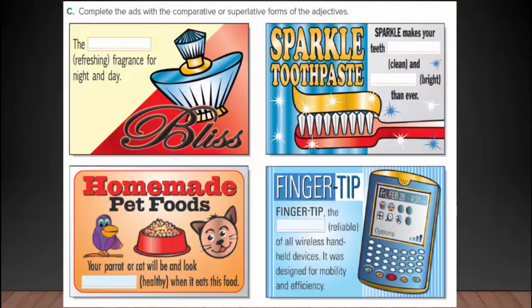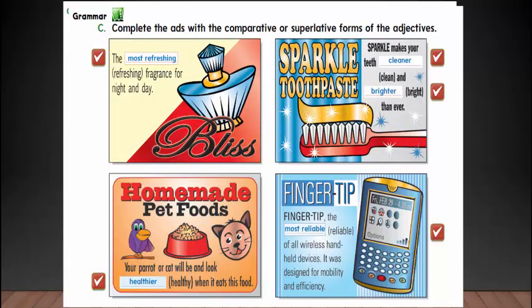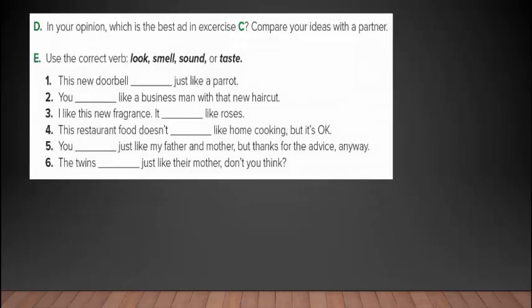Complete the ads with comparative or superlative forms of the adjectives — أكمل الفراغات التالية في هذه الإعلانات التجارية باستخدام صيغة المقارنة أو صيغة التفضيل. Now we will see the answers. In your opinion, which is the best ad in exercise C? Compare your ideas with your partner — في رأيك أي إعلان من الإعلانات السابقة تعتبره أفضل إعلان؟ Use the correct verb: look, smell, sound, or taste.